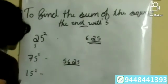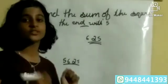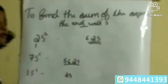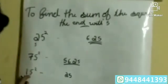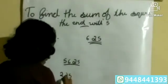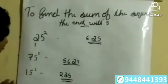For 15 squared: the square of 5 is 25, so we write 25. Then 1 plus 1 is equal to 2, and 2 into 1 is equal to 2. Then the answer will be 225.